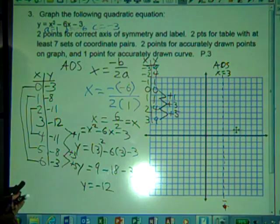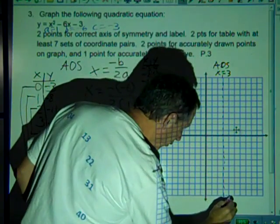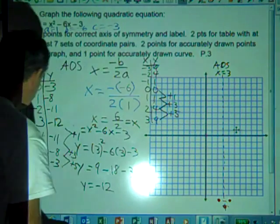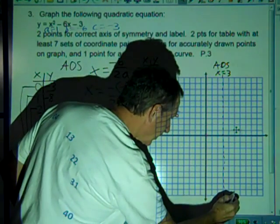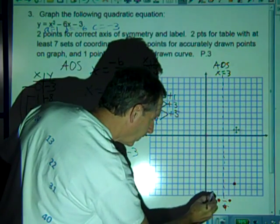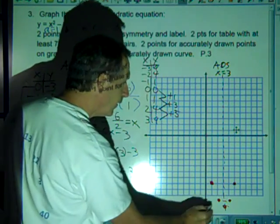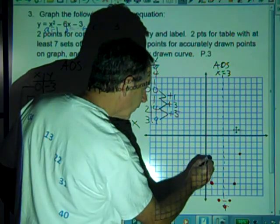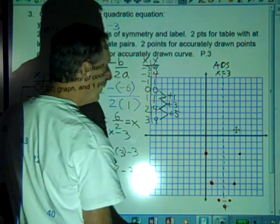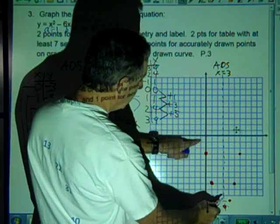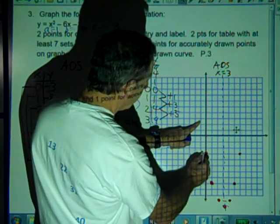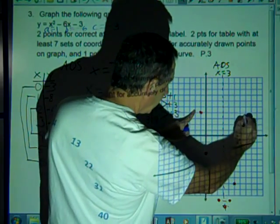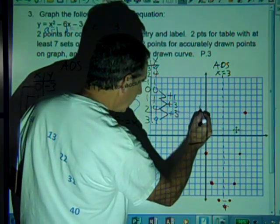So let's go ahead and graph the remaining points. Here we have 4, negative 11. We have 2, negative 11. We have 5, negative 8. So here's 5, negative 8. Here's 1, negative 8. And finally, we have 6, negative 3. And we have 0, negative 3. And if we want to go ahead and add more points here, if we go to x equals negative 1, we take a step pattern of 7. And so there would be a point up here and a point here. So now we have 9 points and we can draw.